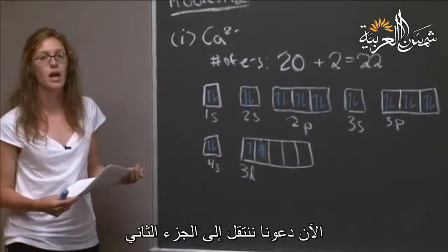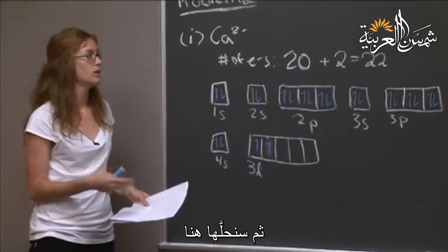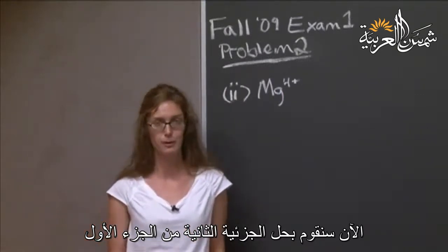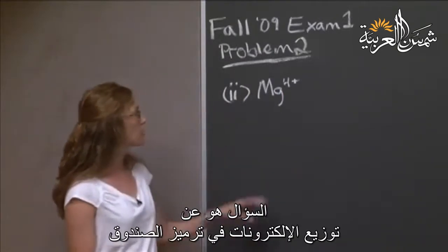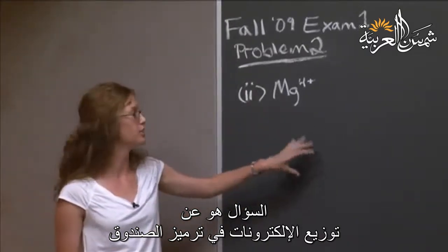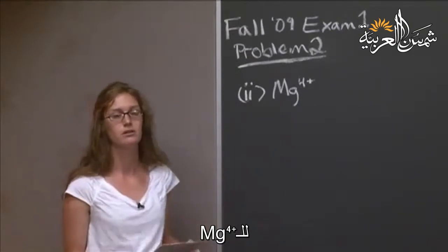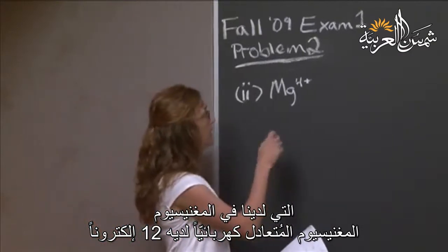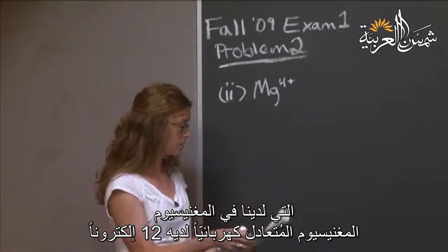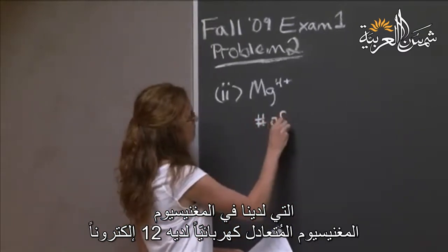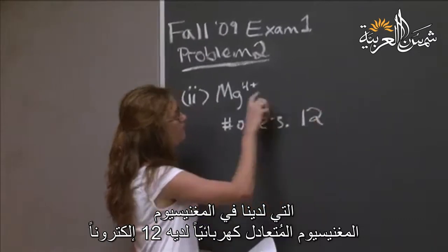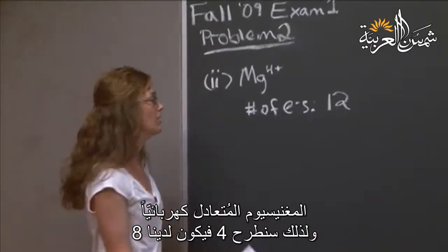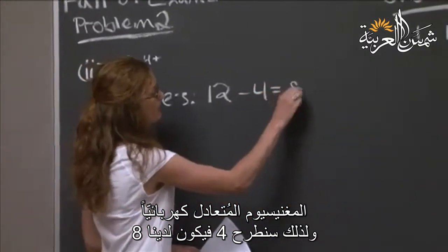Now let's move to the second part, and maybe you can try it by yourself, and then we can do it here. Now we're going to do the second part of this first part of problem number 2. It asks us for the electron configuration in box notation of magnesium 4+. So again, we're going to determine how many electrons we have, which neutral magnesium has 12 electrons.